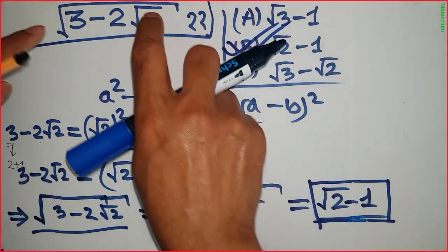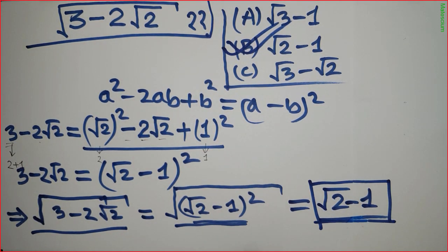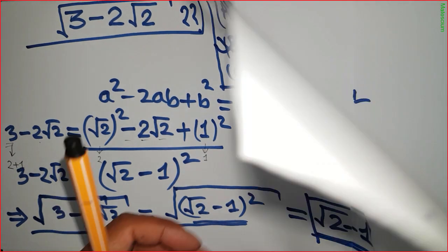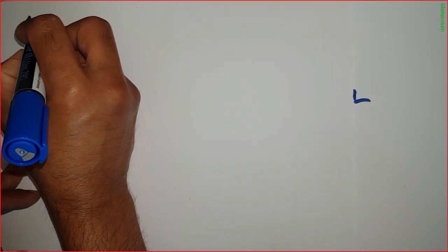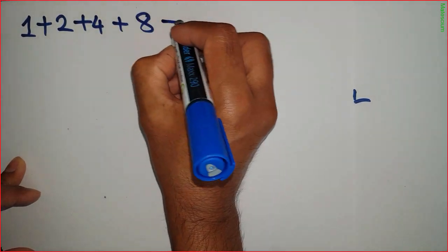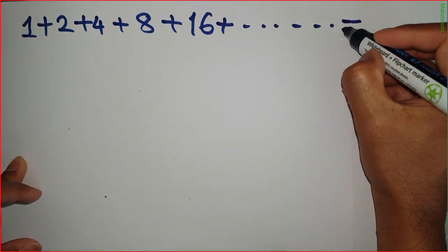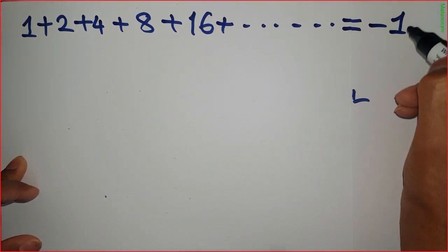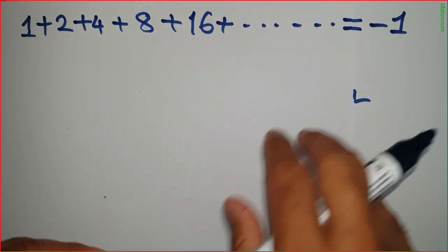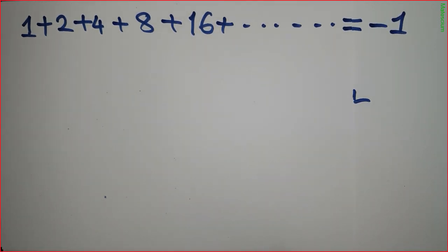So the simplified solution is square root 2 minus 1. This is the right answer. It seems very complex, but the solution is very simple if you know the right way. Now, here is another interesting mathematical statement: 1 plus 2 plus 4 plus 8 plus 16 plus dot dot dot equals minus 1. Would you believe that?